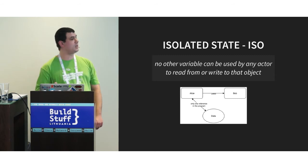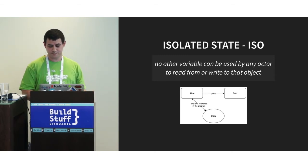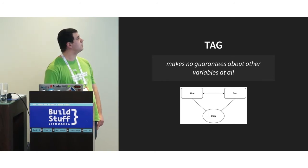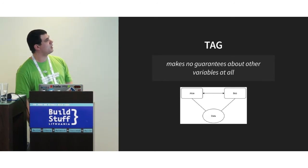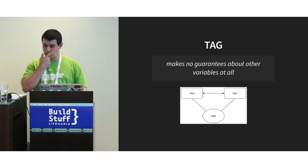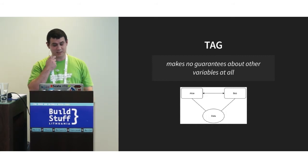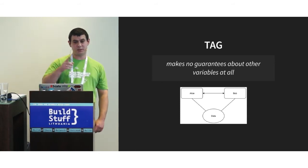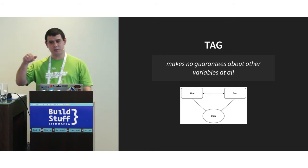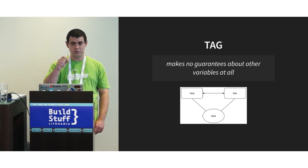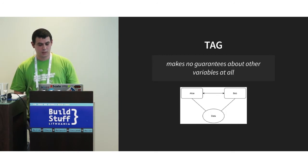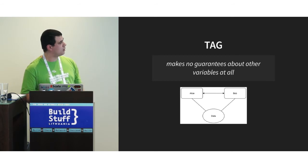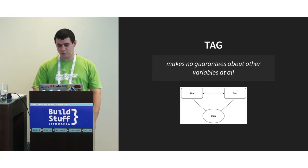For ISO (isolated state): no other variable in any actor can read from or write to that object. ISO is the only variable in the whole system that can write and read from that object — it is read and write unique. To pass data safely between actors, you give up your rights to read or write it, which is what ISO is for. If you don't need to pass data, you can use refs. The last capability is tag, which makes no guarantees about any other variable. You cannot read from or write to it, but you can pass identity with it — for example, compare tags, or call behaviors on actors.